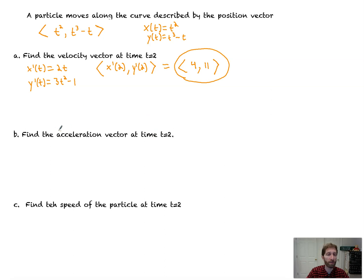Find the acceleration vector at time t equals 2. So the acceleration vector is going to come from x double prime of t, which is the derivative of that, which is 2, and y double prime of t, which is going to be just 6t, 1 goes to 0. So the acceleration vector is x double prime evaluated at 2, and y double prime evaluated at 2. And that ends up equaling out to just plugging 2 into here. Well, there's nothing to plug 2 into. Our acceleration is constantly 2. And then 6 times 2 is 12. So our acceleration is 2, 12. Nice.